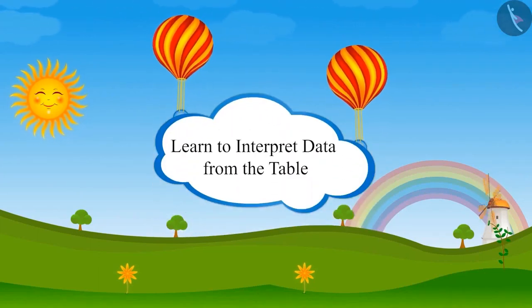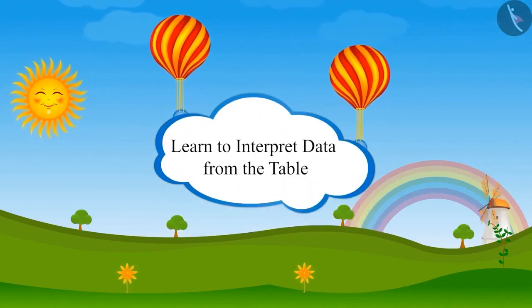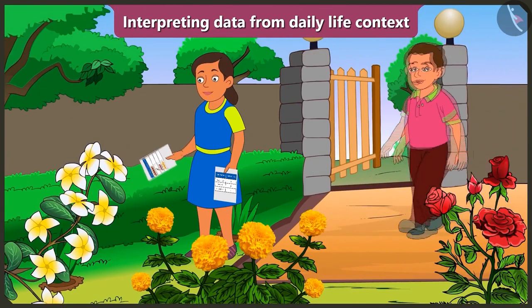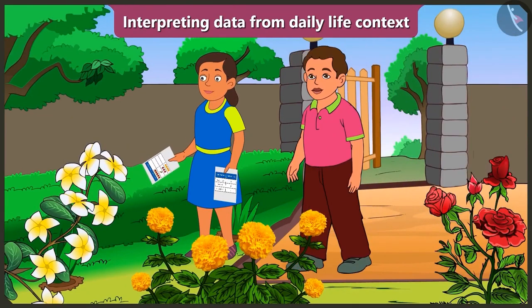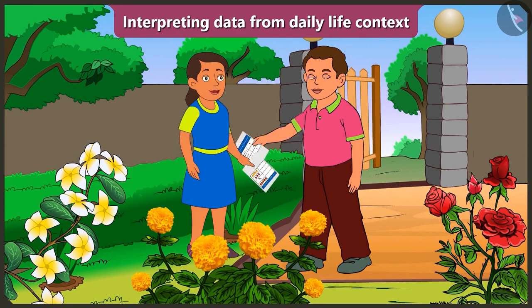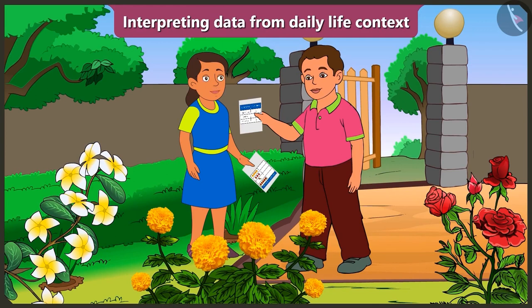Interpreting data from daily life context. Hey Bubbly, what are you doing in the garden? Bunty, Mummy has prepared this table and given it to me. There are different flowers in the garden. I am counting the blossomed flowers to find out which flowers have blossomed.